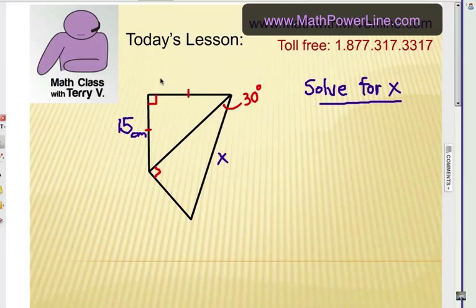So I've got two triangles that are attached together here marked as you can see and I have a 30 degree angle right there. This is an isosceles right triangle which should tell you something. This leg right here is 15 centimeters and I'm supposed to solve for X.